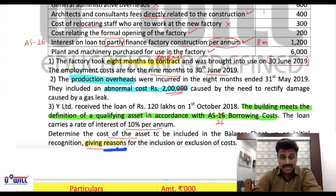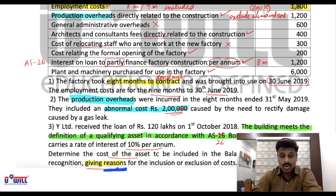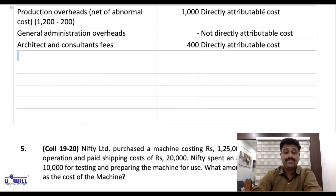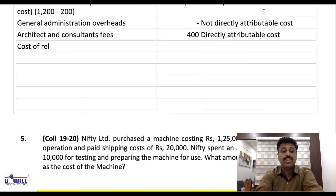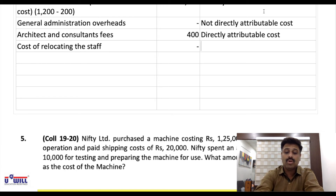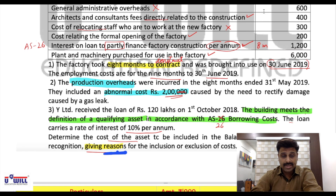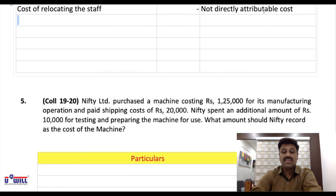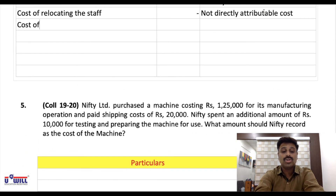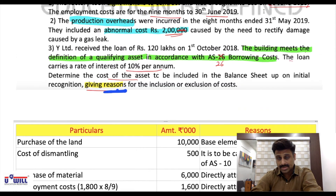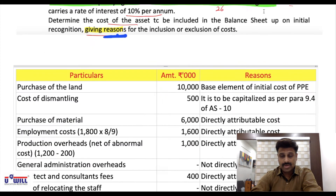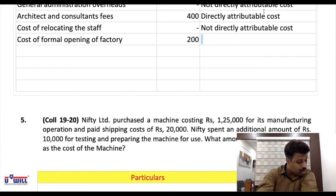Cost of relocating staff — not included. Cost of formal opening of factory: amount 200 — included. Reason: directly attributable cost.